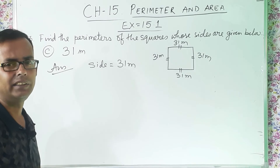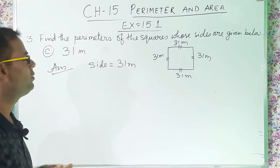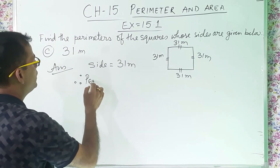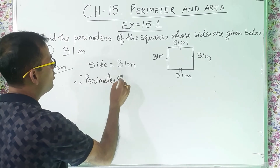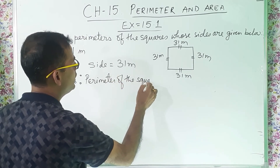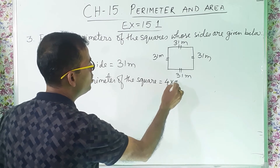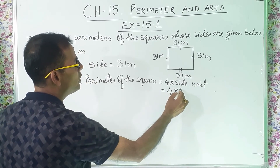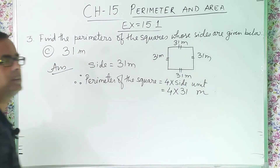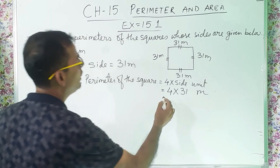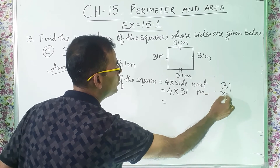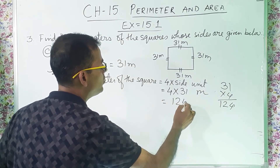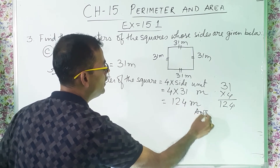I prefer writing side, but if you want you can write A equal to 31 meter. Therefore, perimeter of the square equals 4 into side: 4 into 31 meter. We multiply: 4 ones are 4, 4 threes are 12 — so 124 meter. And this is the answer.